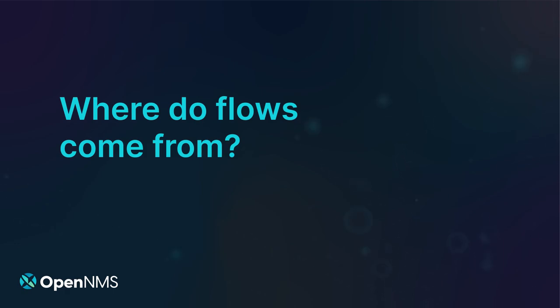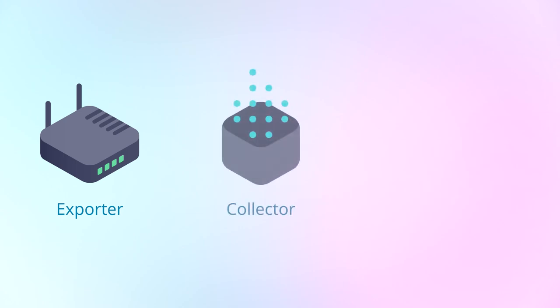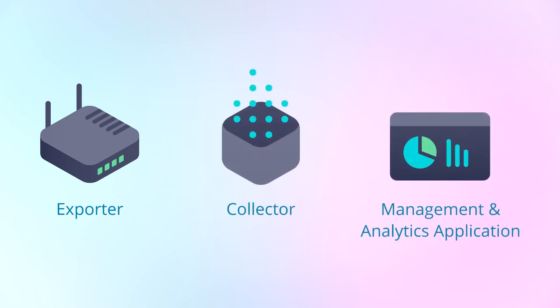Network elements for flows consist of exporters — devices like routers, switches, and firewalls — collectors, in our case OpenNMS Meridian, and management and analytics applications, also OpenNMS Meridian. It's useful to understand that while flows are often exported from networking equipment like routers and switches, flow data can also come directly from servers, and they can export telemetry data through the sFlow protocol.